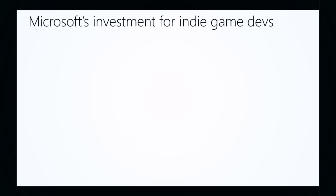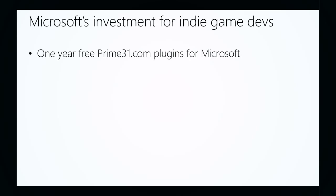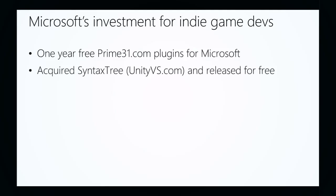All this content is being recorded, so if you miss some of it you can catch up in the next couple of days on our site. Microsoft has made some exciting investments here. Prime 31 is a leading plugin writer for Unity — there's a year free for Prime 31 plugins for Microsoft. Go to their website, find the Microsoft section, and you can download them for free for a year. Microsoft also acquired Syntax Tree. If you've heard of Unity VS, that enables you to use Visual Studio to develop and debug your Unity code. Previously you could only use it as a code editor, but this plugin allows you to also debug with it — and that was about a $100 product. Microsoft bought the company and released it for free.